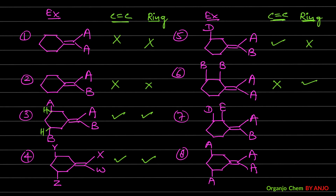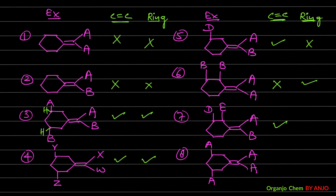Example 7: The alkene's SP2 carbons both have different groups, so the molecule can show GI from the C=C double bond. For the cyclic part, one carbon has D and H, another has E and H — both are SP3 with different groups, fulfilling the ring GI condition. So this molecule can show GI from both the C=C double bond and the ring.